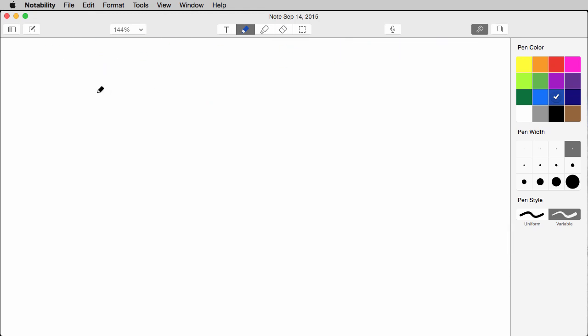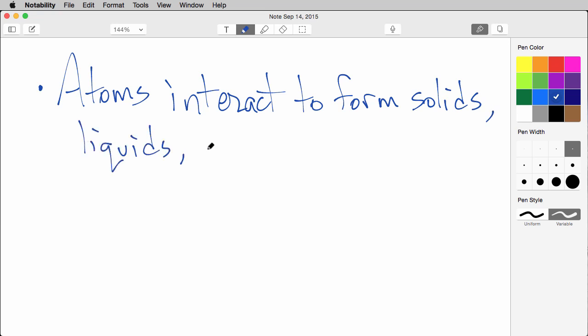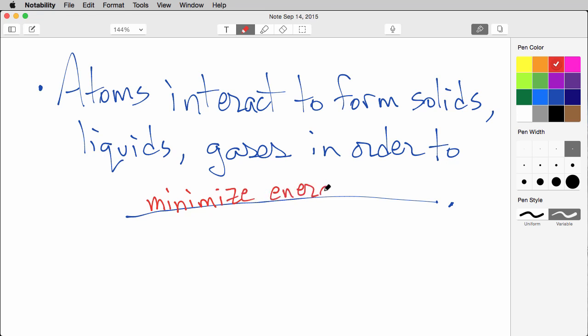Now I'd like to ask you to complete this sentence. Write this down in your notes and see if you can answer this before I give you the answer. So atoms interact to form solids, liquids, gases in order to what? But why do atoms interact to form solids, liquids, and gases? Well the one answer that I like is to minimize energy.